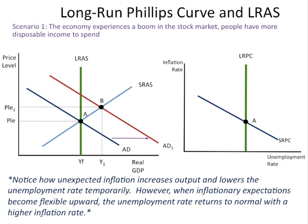How do we reflect this increase in aggregate demand on the Phillips curve model? We need to show prices rising and output rising. There is an inverse relationship between GDP and unemployment, so if output is increasing, unemployment will decrease. On the Phillips curve model, we need to show prices increasing and unemployment falling — a sliding along the short run Phillips curve to the left.